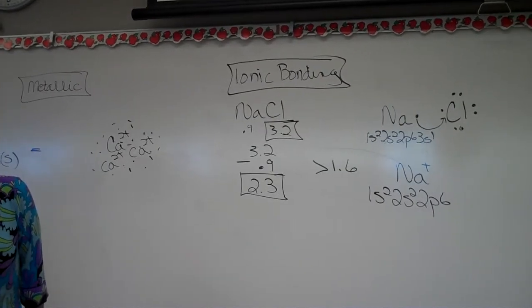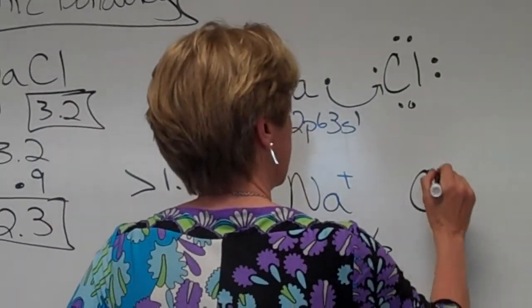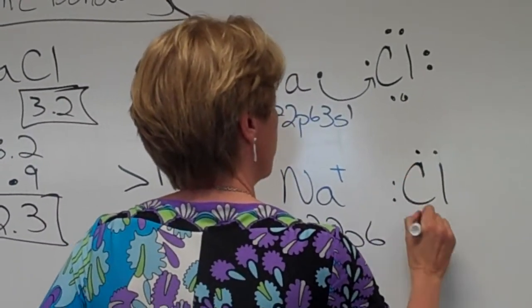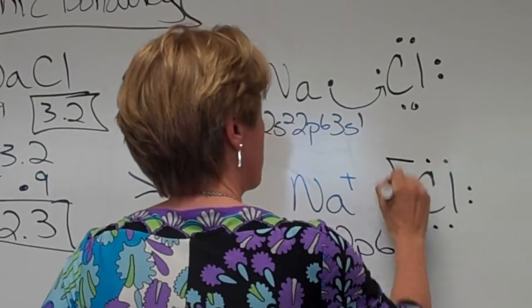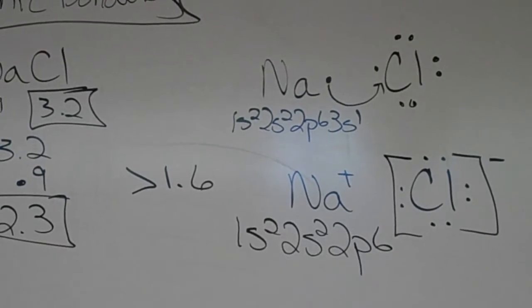Where did that valence electron go? It went to the chlorine. So now chlorine looks like this. 1, 2, 3, 4, 5, 6, 7, 8. Remember, and we put this guy in brackets, and we put the charge outside of it.